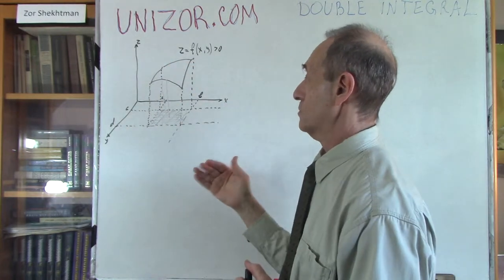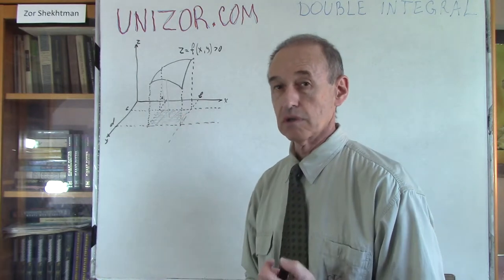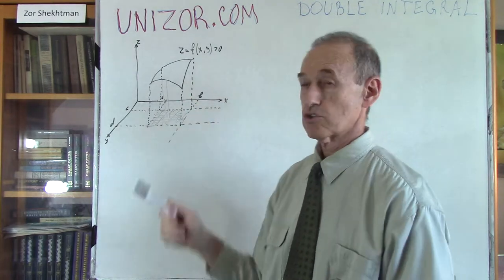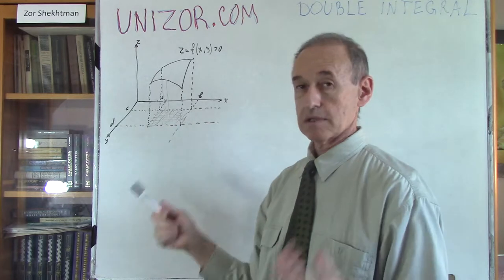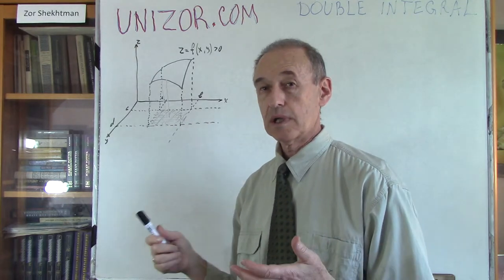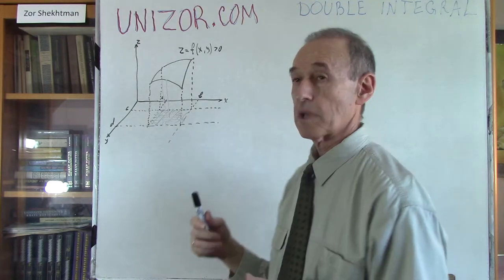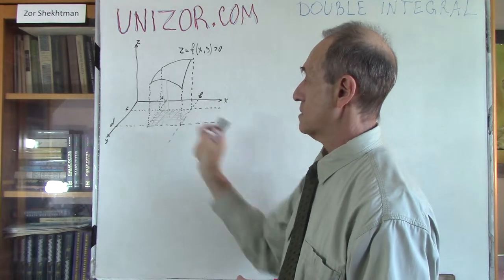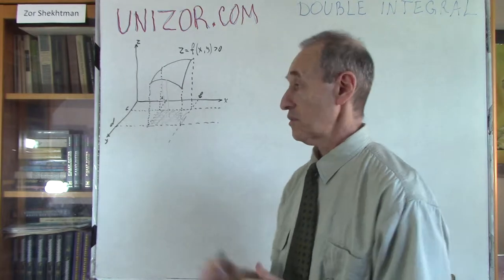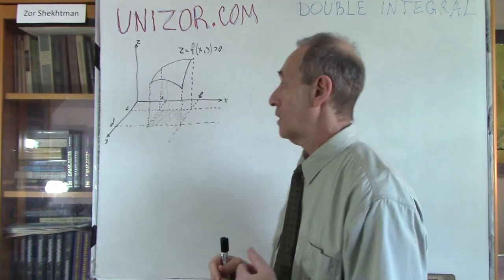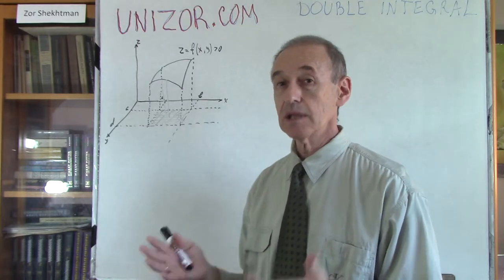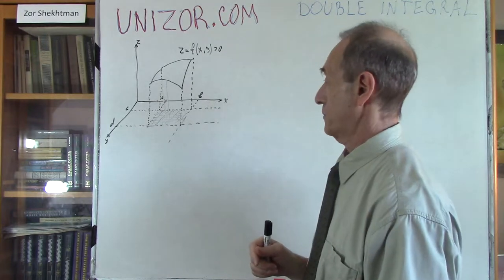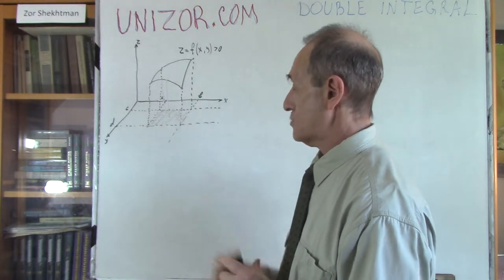The parallelepiped grows up to touch the surface. The volume of each particular parallelepiped I know — that's the product of three dimensions. I will add them all together. Similar to the two-dimensional case, there is a theorem that whenever I shrink the size of these small rectangles so the biggest of them goes down to zero, I will have a certain limit, and that limit would be the volume of this particular figure.